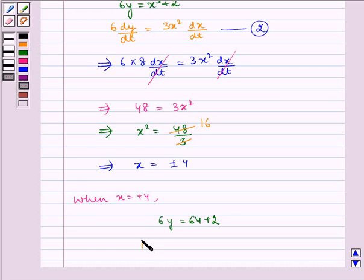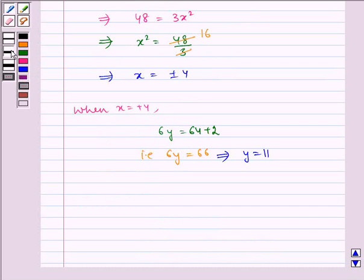That is 6y equals 66, and it implies y equals 11. Hence, the first required point is 4, 11.